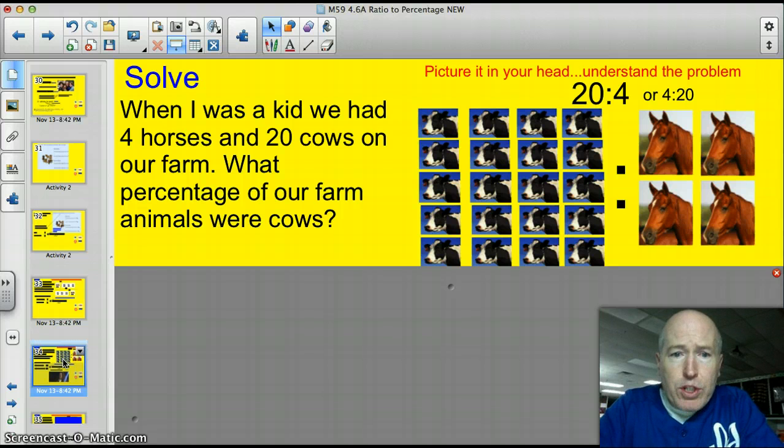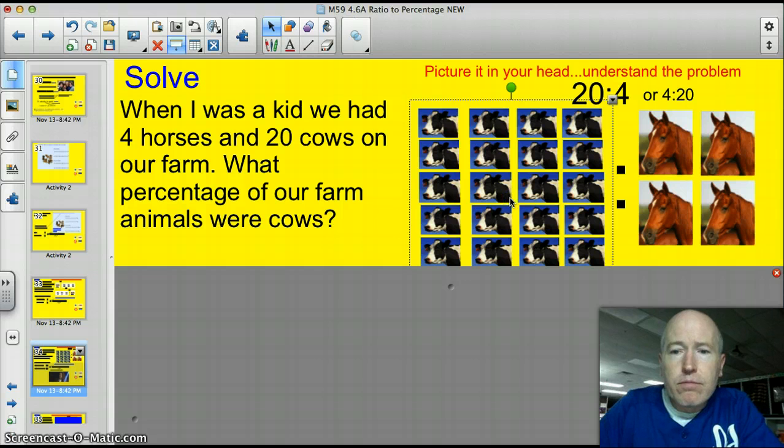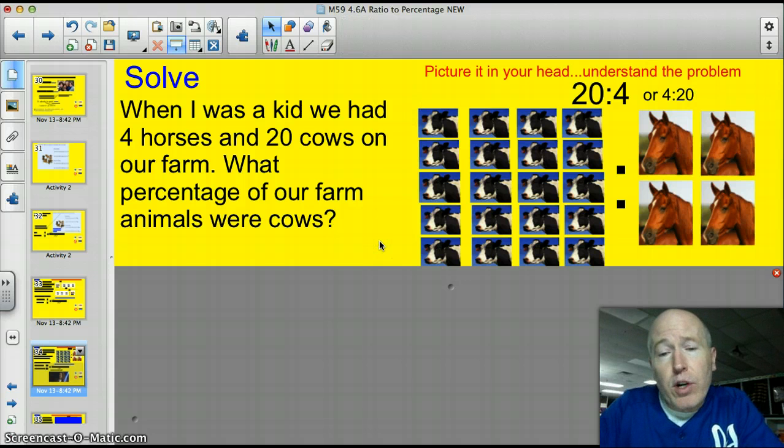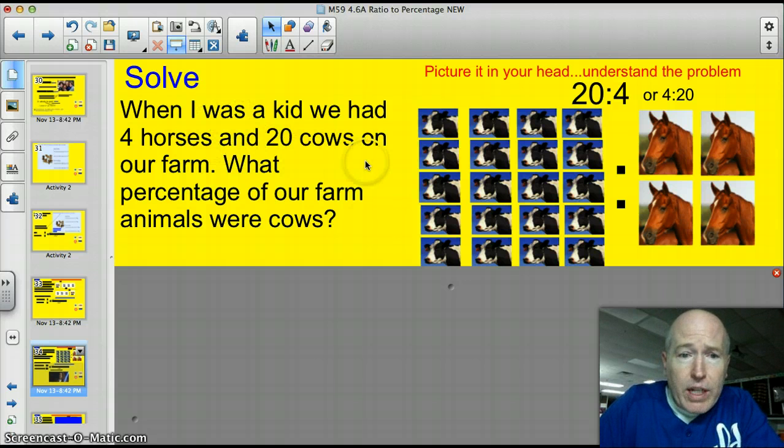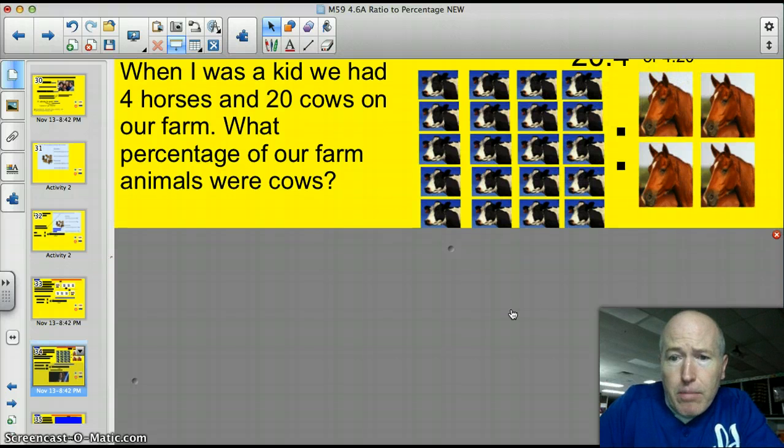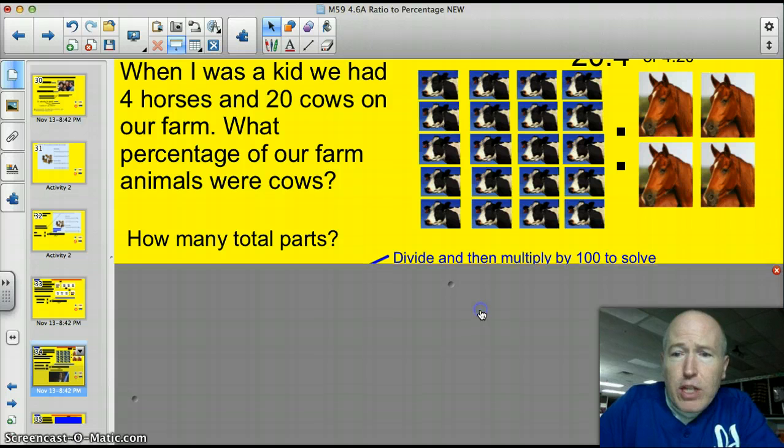Alright, let's work some together. When I was a kid, we had four horses and 20 cows on our farm. What percentage of our animals were cows? Well, for those of you who don't know what a cow is, let's just go ahead and start. There we go. And for those of you who like animal sounds, we've got the horse too. I know, I need more to do with my life than sit around and add sounds to this. So when I was a kid, we had four horses and 20 cows on our farm. What percentage of our farm animals were cows? So, here I've established 20 cows and four horses and I labeled it. Now, I could reverse that and write it as 4:20 too, but I think it's important to have that.